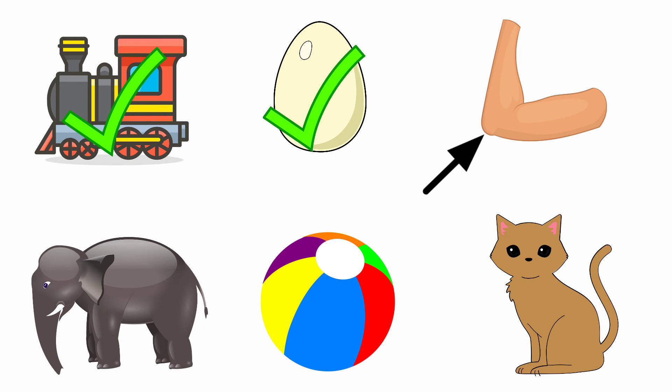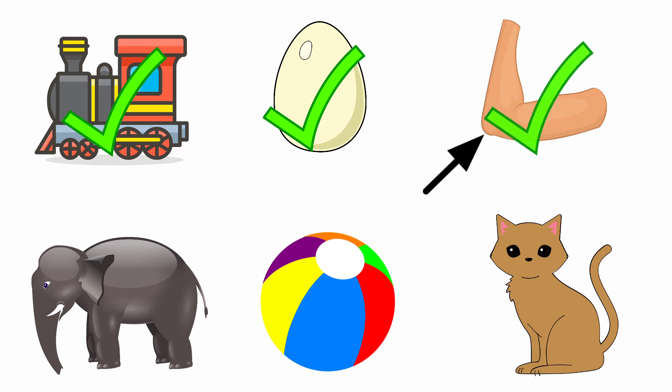Next one — elbow. The beginning sound of the picture 'elbow' is 'eh', and the sound of the letter E is 'eh'. Both are same sounds. So we are going to tick the picture elbow.